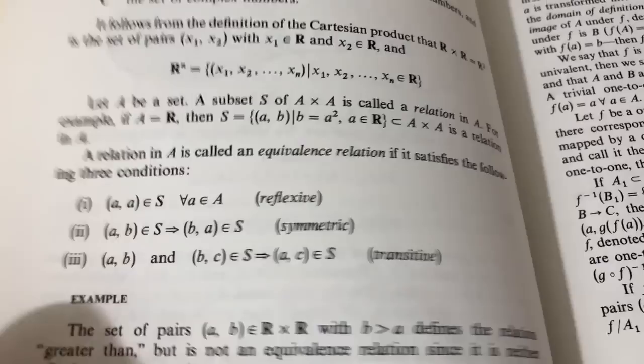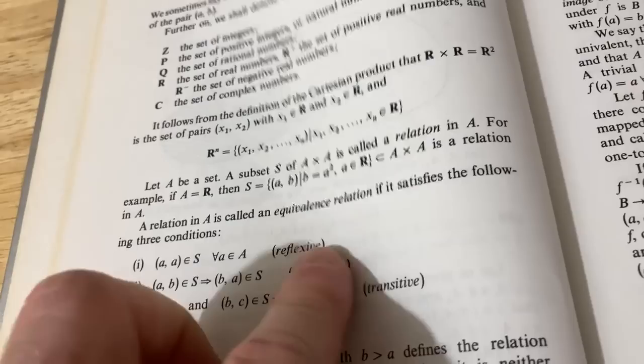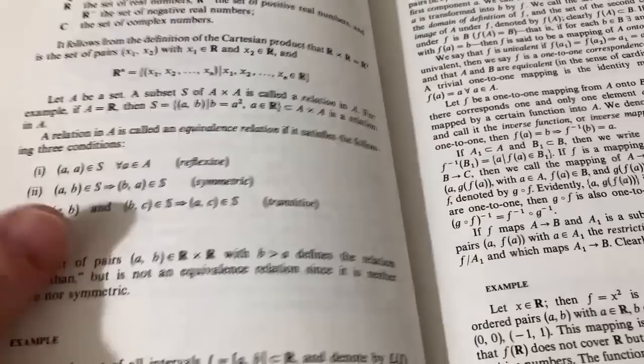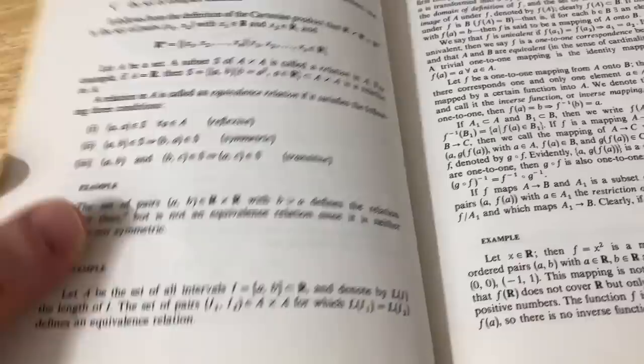And equivalence relations are really important because they partition a set. So if you have a relation and it has these properties, so like it's reflexive, symmetric, and transitive, then you have an equivalence relation. Which is really cool because then you can break up your set into equivalence classes.